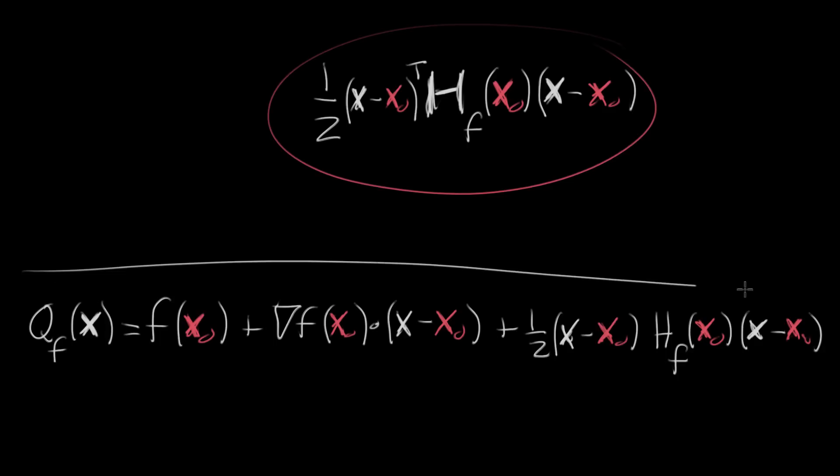And this is the quadratic approximation in vector form, and the important part is, now, it doesn't just have to be of a two-variable input. You could imagine plugging in a three-variable input, or a four-variable input, and all of these terms make sense. You take the gradient of a four-variable function, you'll get a vector with four components. You take the Hessian of a four-variable function, you would get a four-by-four matrix, and all of these terms make sense.